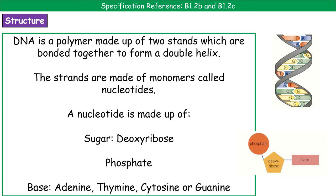The monomers in DNA are called nucleotides. The nucleotide itself — you can see the block diagram in the bottom right — has a phosphate, a sugar (which in this case is deoxyribose), and a base. That base takes one of four types in DNA: it will be adenine, thymine, cytosine, or guanine — A, T, C, or G.